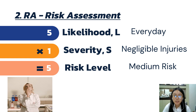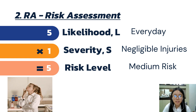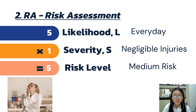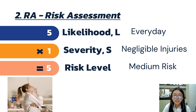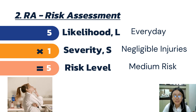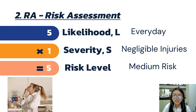The likelihood of this activity is frequent, which is 5, while the severity is only causing a minor injury, which is 1. 5 times 1 is 5, so our risk level is considered as medium.